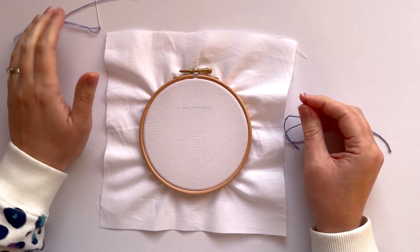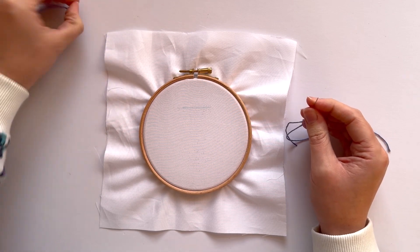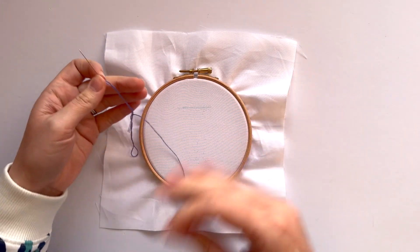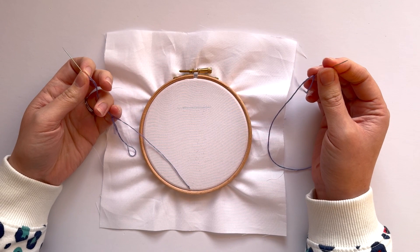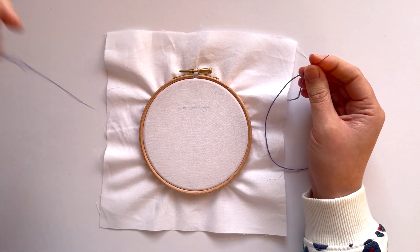Hello, let's learn satin couching. I've got two needles here, one has got three strands of thread and one has got six. I'm going to use the six as my thread that I'm going to couch.